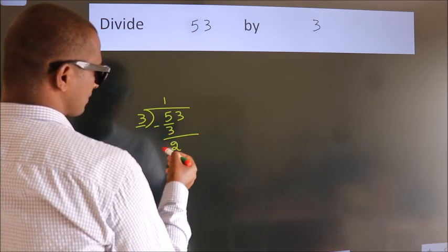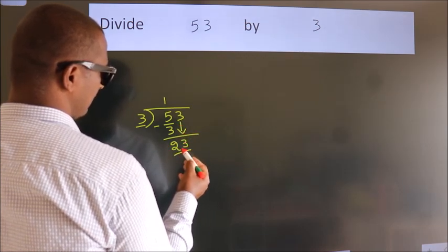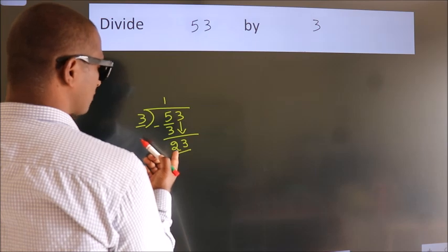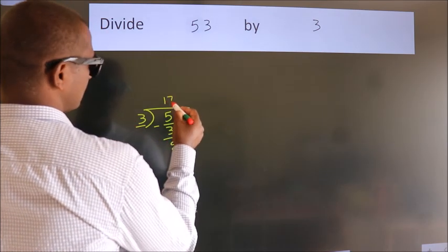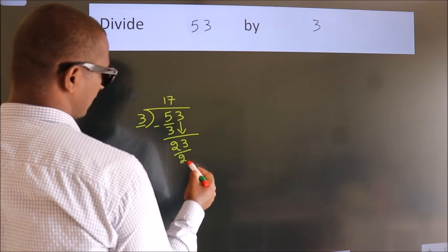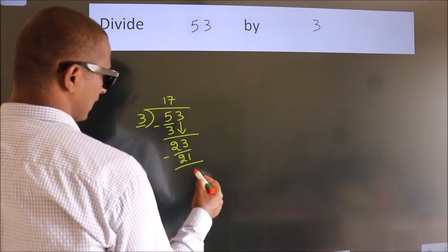After this, bring down the beside number. So, 3 down. So, 23. A number close to 23 in 3 table is 3 sevenths 21. Now, we subtract. We get 2.